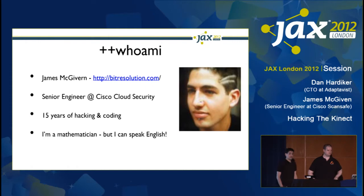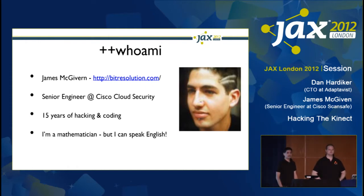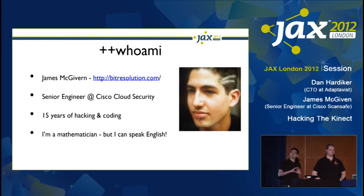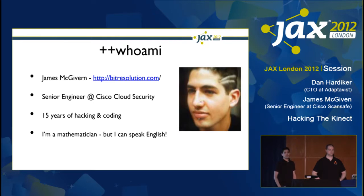I'm James McGiven. I work for Cisco as part of their cloud security team, so we deal with real-time threat analysis and filtering for the internet of big companies — interesting field, completely unrelated to the talk we're doing. I've been a hacker-coder for about 15 years. I'm a mathematician by background, but please don't judge me for it. I do speak English and I can code.